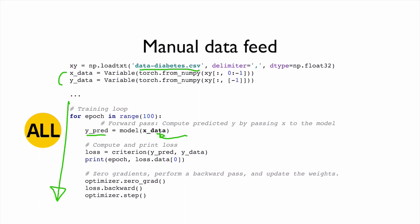In this example, feeding all data manually is not a big deal, because the data size is small, something like 700. But if you have to deal with thousands or millions of datasets, we cannot feed all of them to the model, and then we cannot compute the gradients for all data points. This is not efficient.